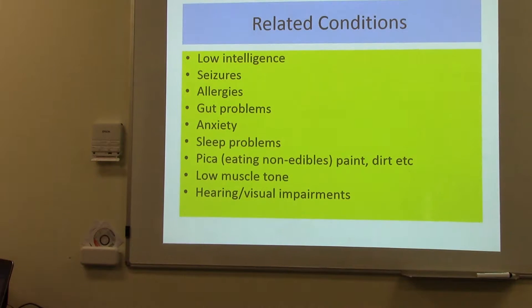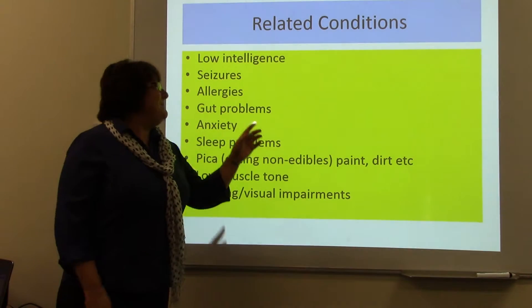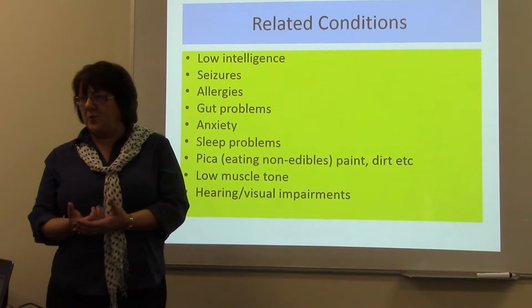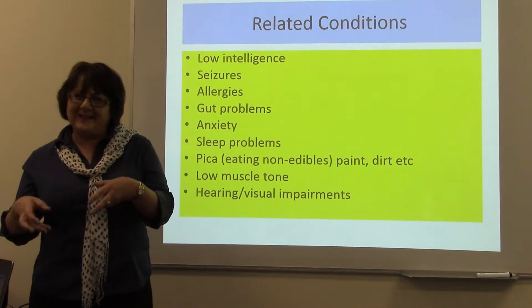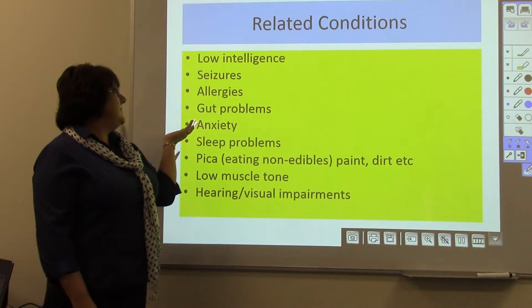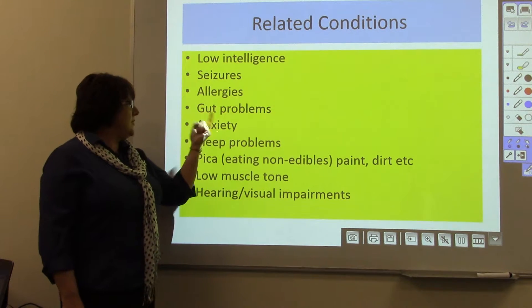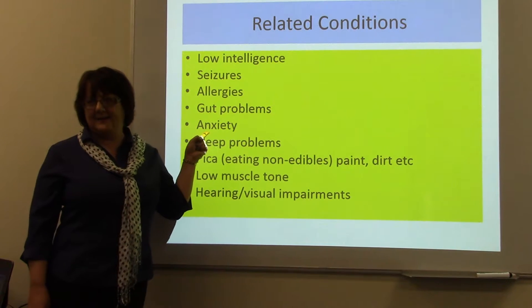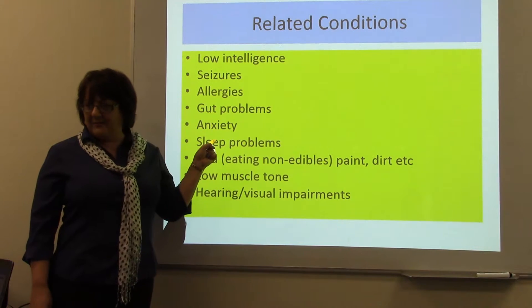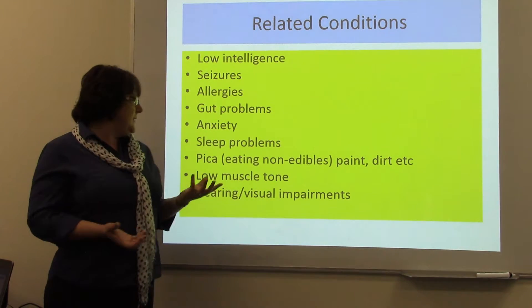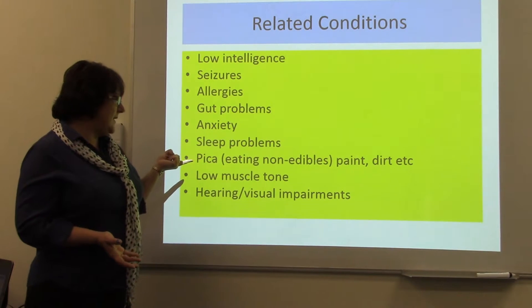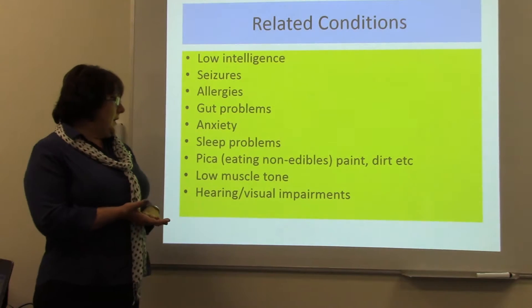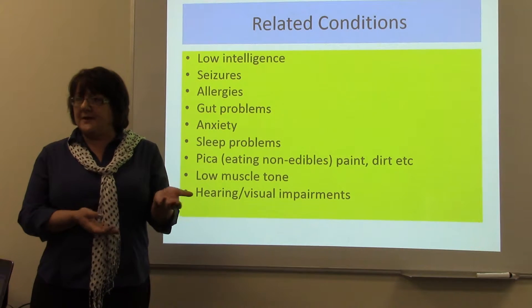There are related conditions — a child with autism may also have something else that isn't necessarily part of autism, but there's often a link. Low intelligence — not always there but it can be. Seizures, allergies, gut problems. The gut problems could also be linked to anxiety. Sleep problems and sleep deprivation can also be related to anxiety. And then there's pica — I haven't come across a student with pica, but it could also be a mineral deficiency.